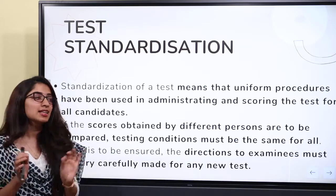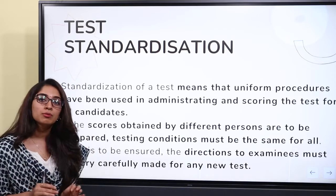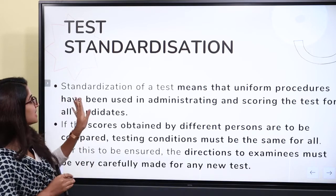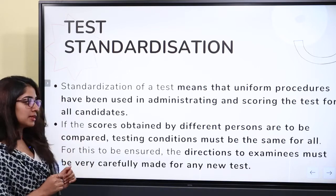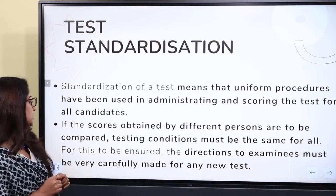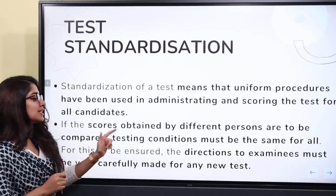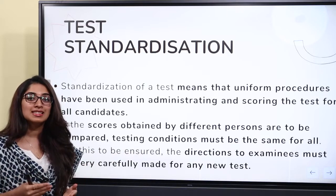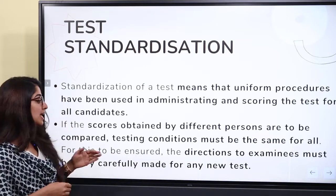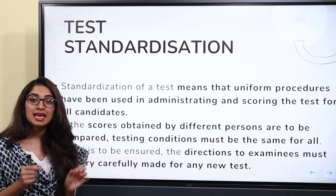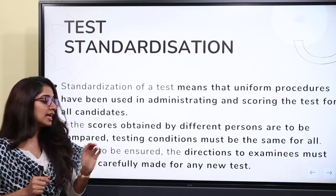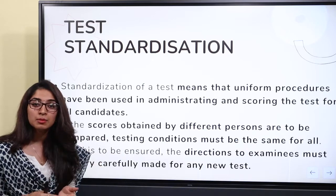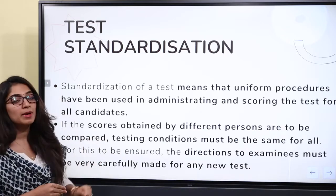In a standardized test, uniform procedures are used in scoring and administration. The scores obtained by different persons are to be compared, so testing conditions must be the same for all individuals. Through every test system, we use standardization to ensure uniformity.